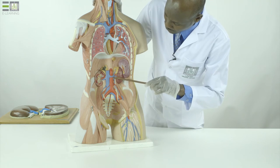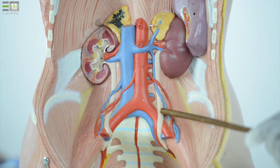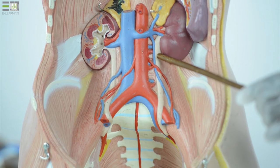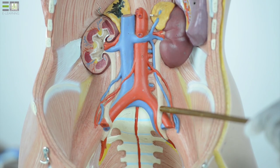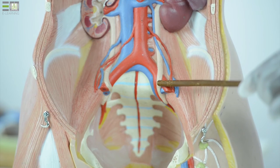The ureter passes from the lower part of the kidney, crosses in front of the tips of the transverse processes of all lumbar vertebrae to enter into the pelvic cavity by crossing the bifurcation of the common iliac artery.